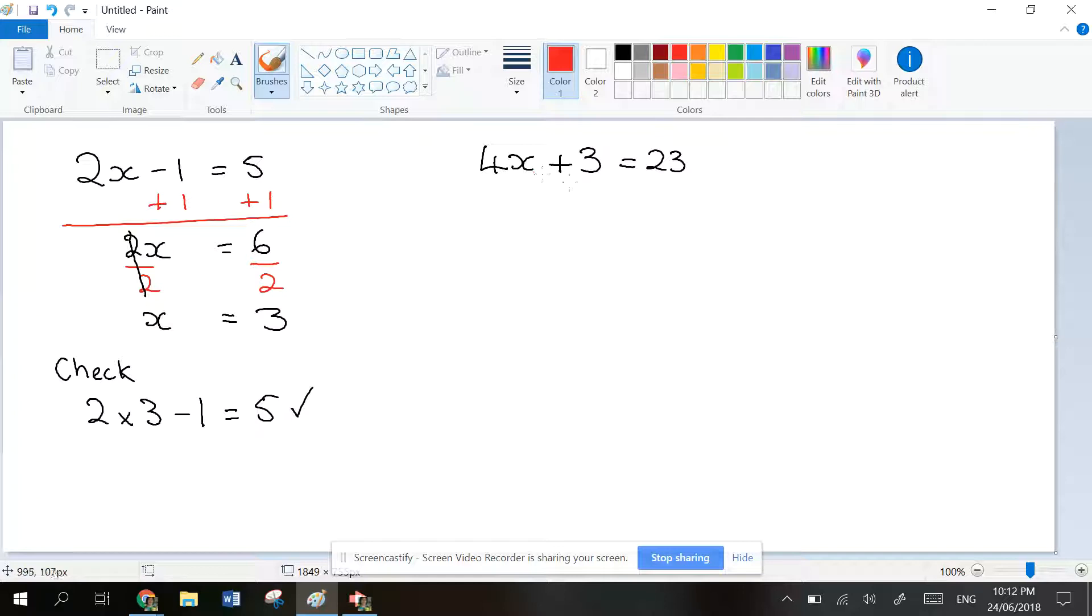The last thing we did was we added 3. So the opposite is minus 3. What you do to one side, you do to the other. Let's balance it out. 4x plus 3, then minus 3, will leave you on the left-hand side with 4x.